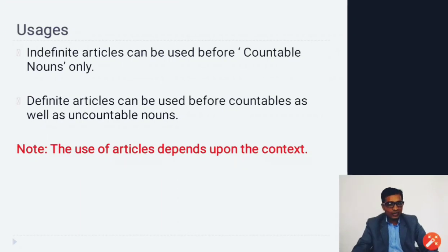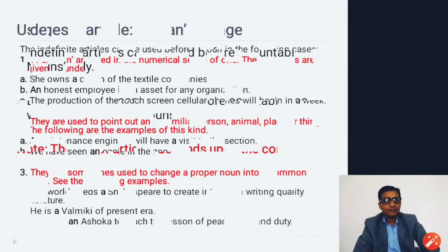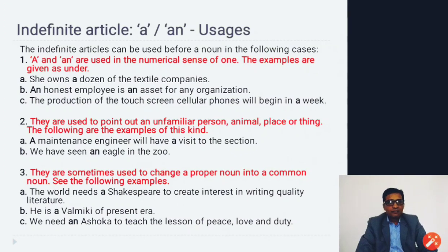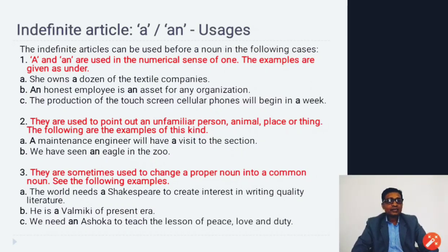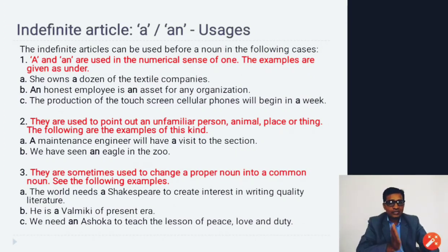Usage: the indefinite article can be used before countable nouns only, while the definite article can be used before both countable and uncountable nouns. The use of articles depends upon the context. 'A' and 'an' are used in the numerical sense of one. For example: 'She owns a dozen textile companies,' 'An honest employee is an asset for any organization,' 'The production of touch screen phones will begin in a week.'